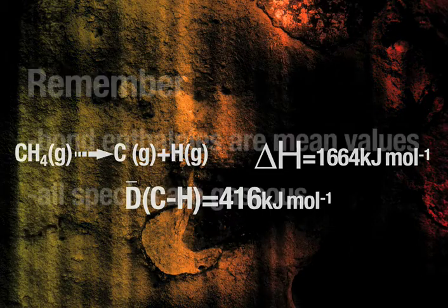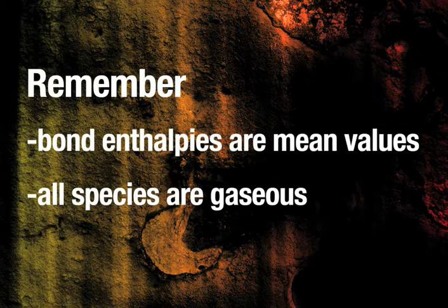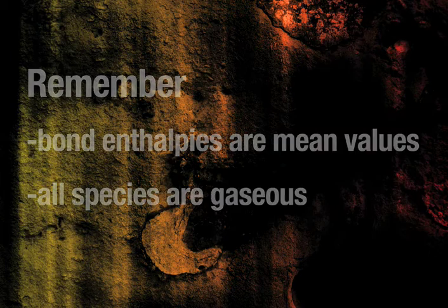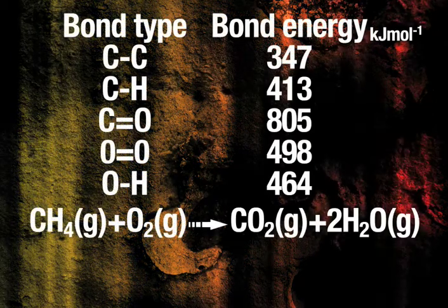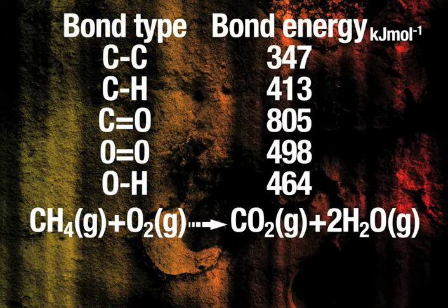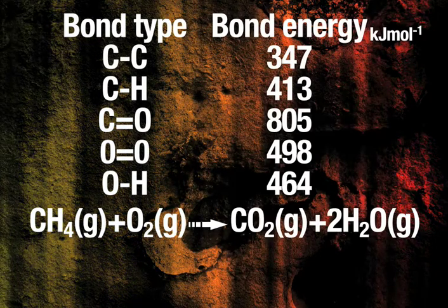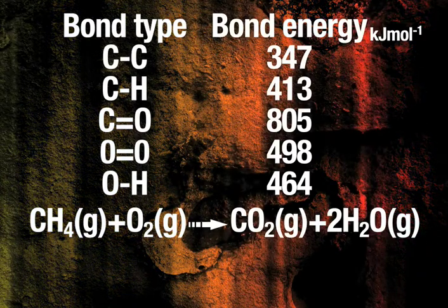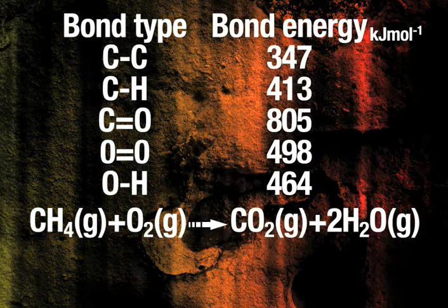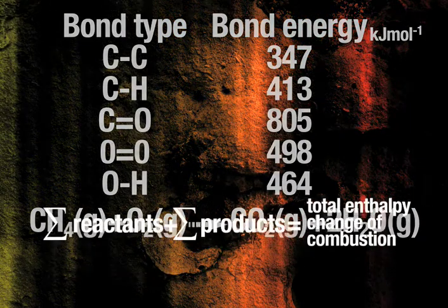Remember, bond enthalpies are mean values and all species are gaseous. Here we have an example of bond dissociations relating to the combustion of methane. First, a balanced equation is needed, and then the values from the table are added so that the enthalpy equation can be used.